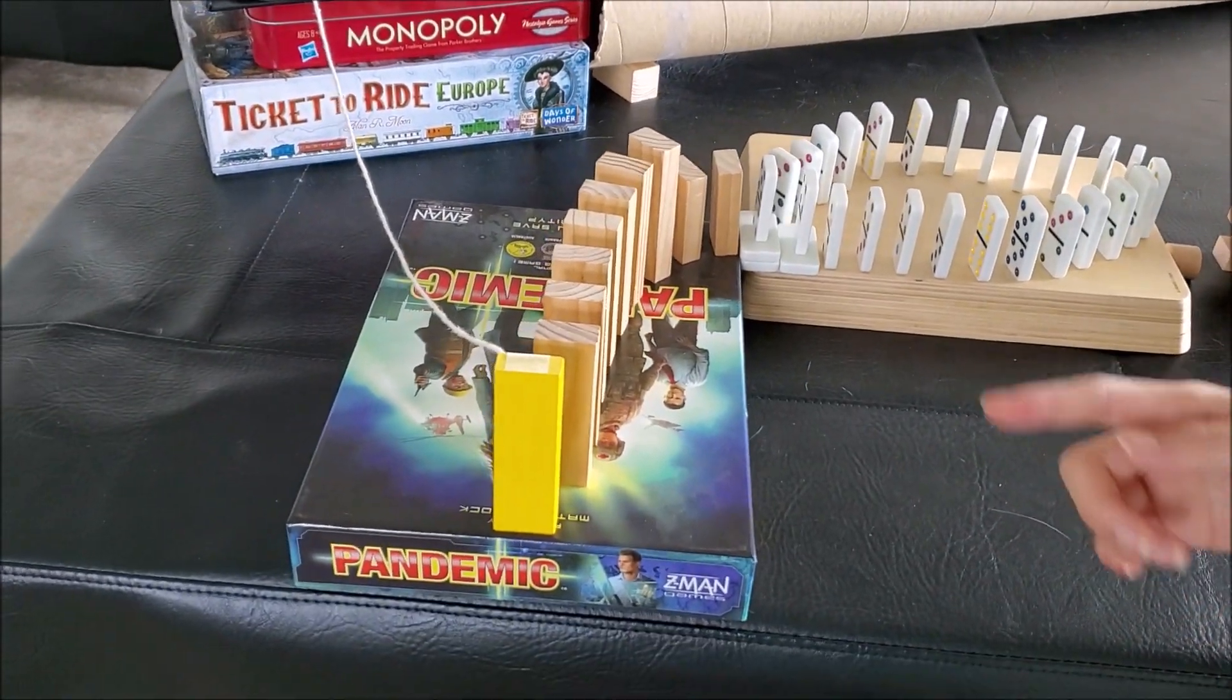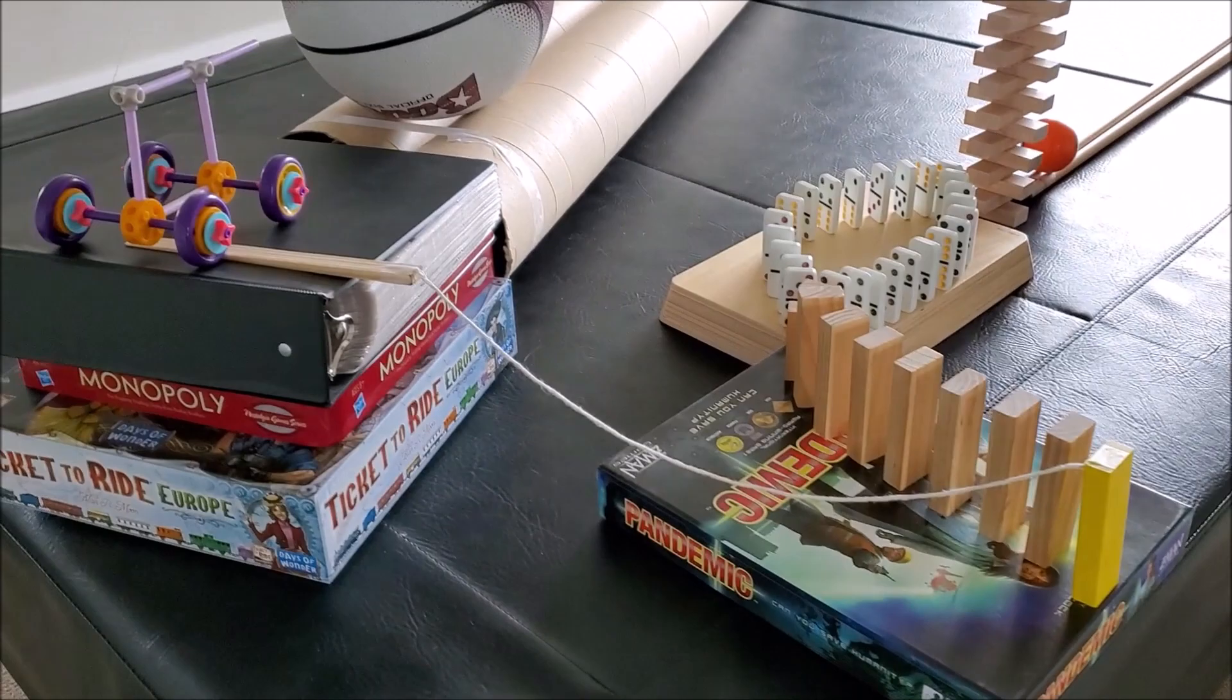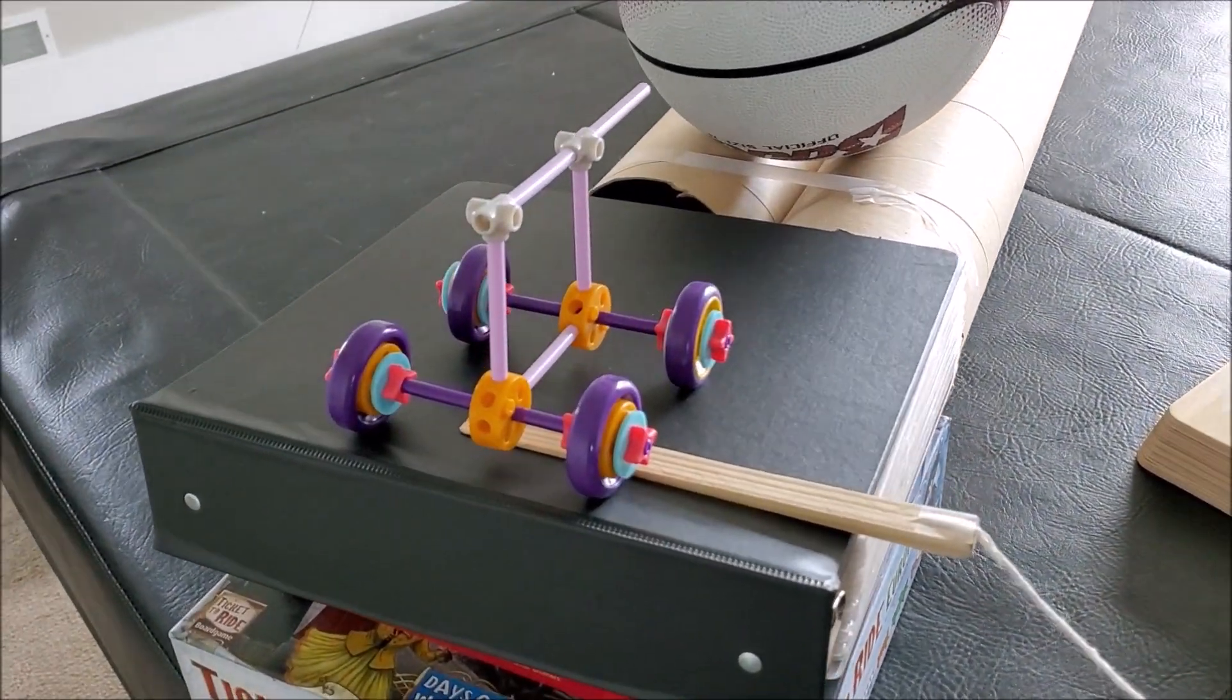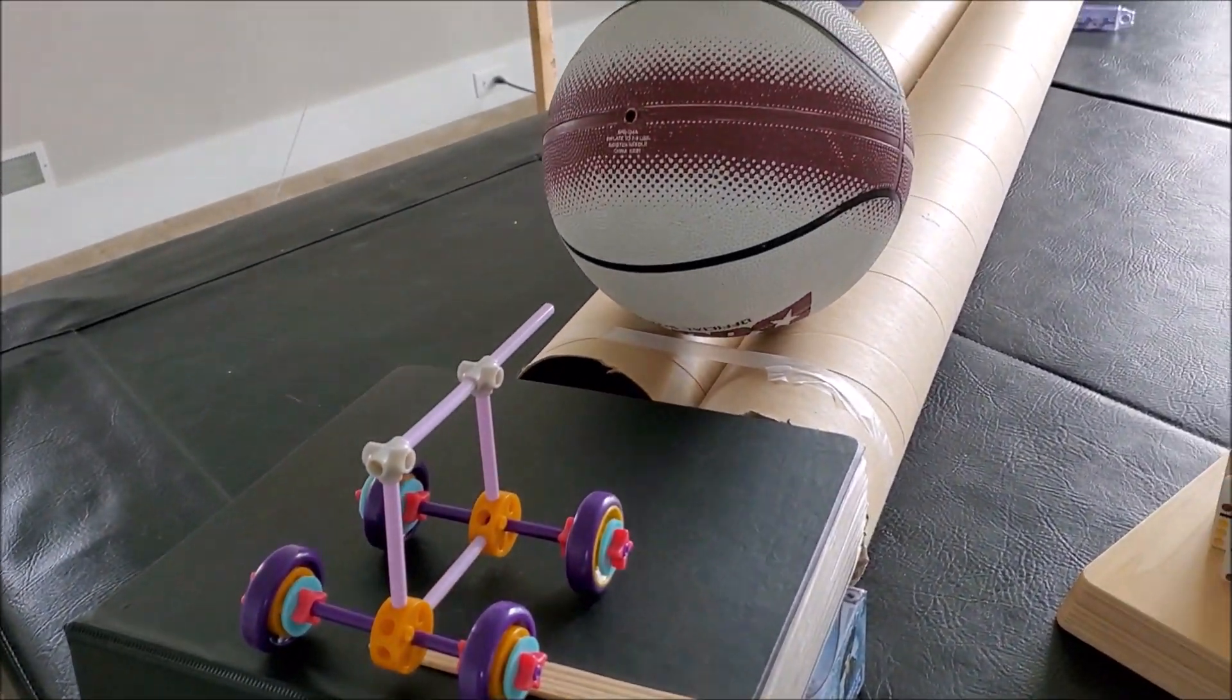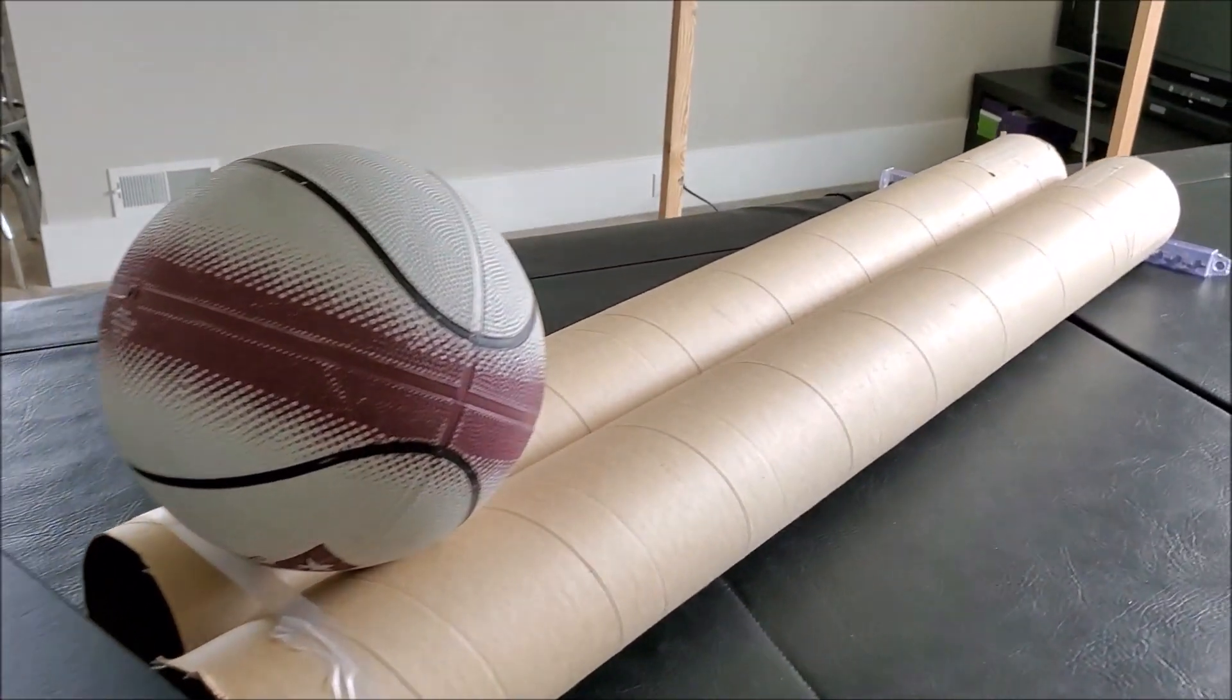The yellow block will fall off the edge, and the string attached to it will pull the stopper out from under the vehicle. It will slide down and knock into the basketball, which will slide down those rails.